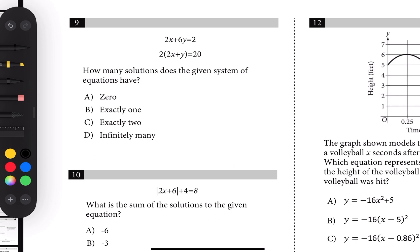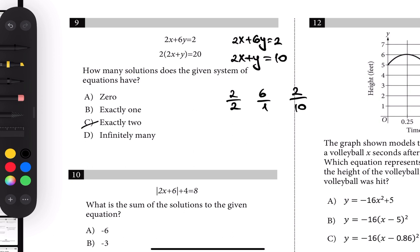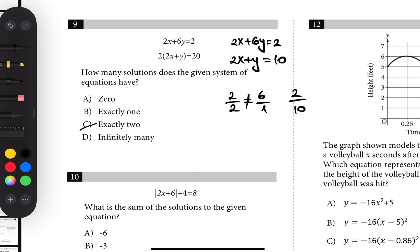Number nine: how many solutions? We don't have to solve it fully. For a system of linear equations there are three cases: infinitely many solutions, exactly one solution, or zero solutions. Simplifying the second equation by dividing each side by 2 gives 2x plus y equals 10. Checking the ratio of coefficients: 2/2 versus 6/1 — those aren't equal, so the lines are intersecting and there is exactly one solution.